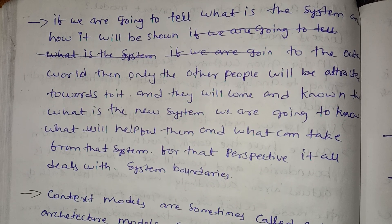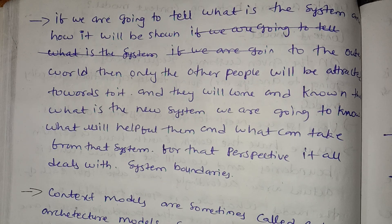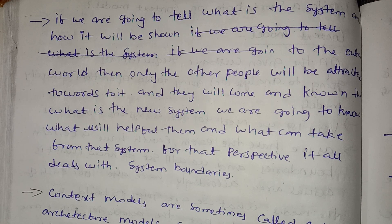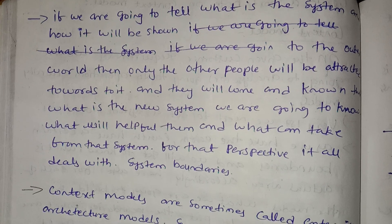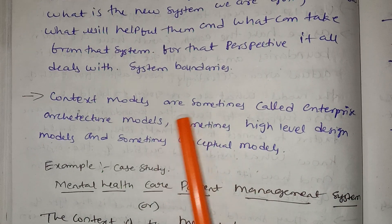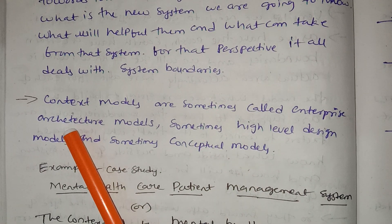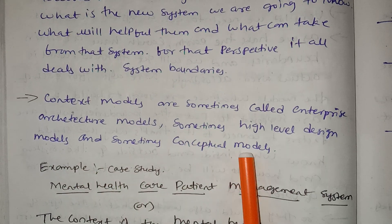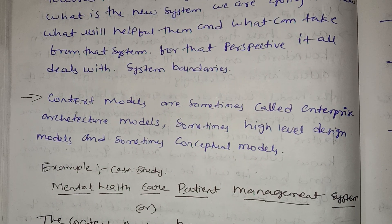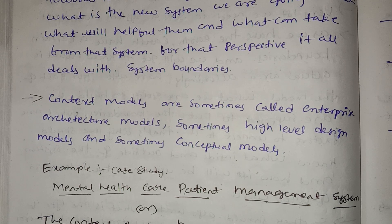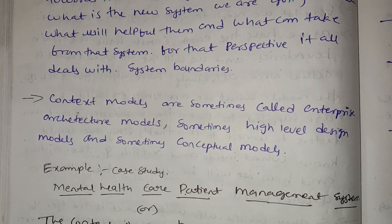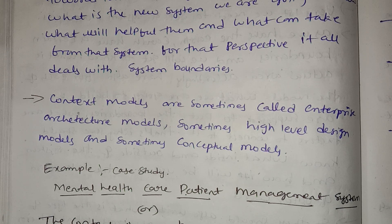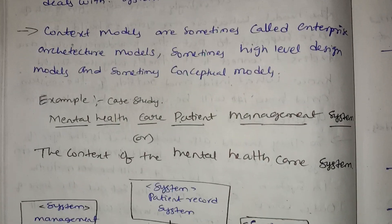System boundaries are based on the product and its demands. Context models are sometimes called enterprise architecture, sometimes a high-level design model, or sometimes a conceptual model.